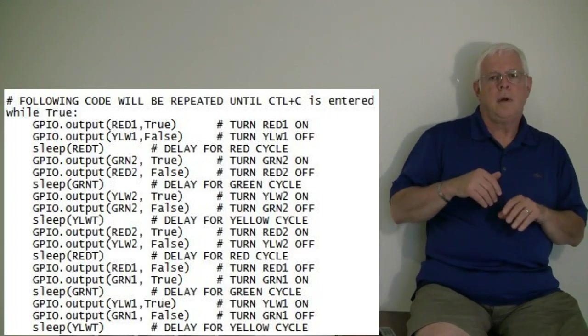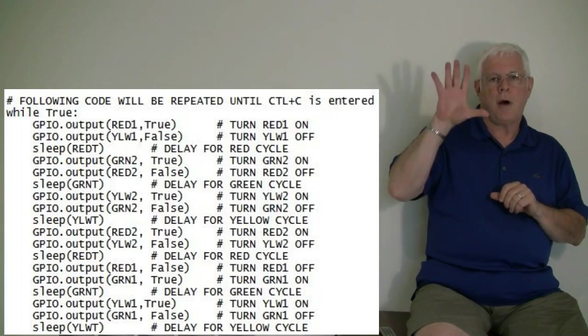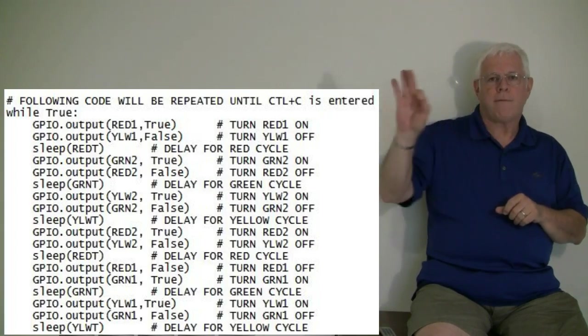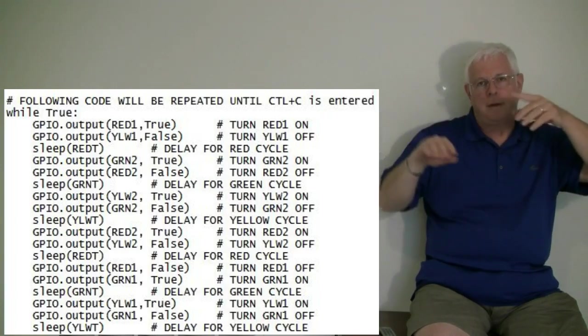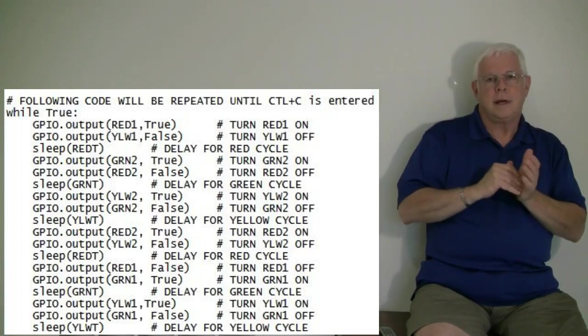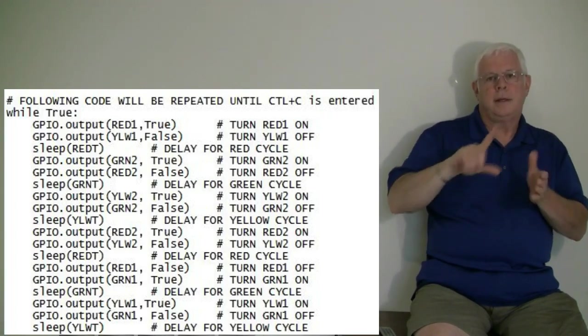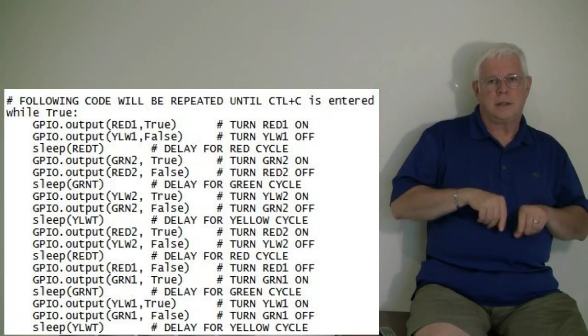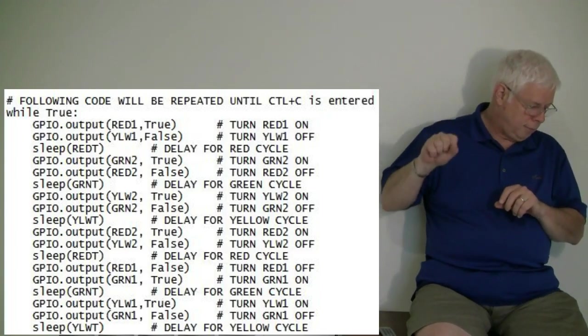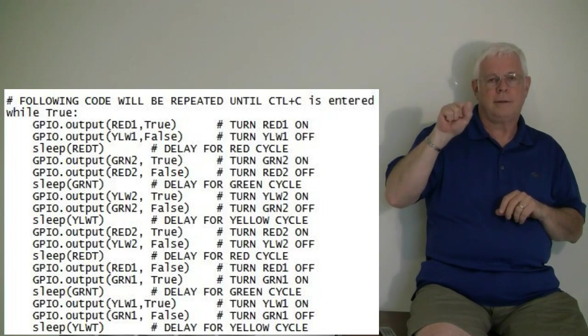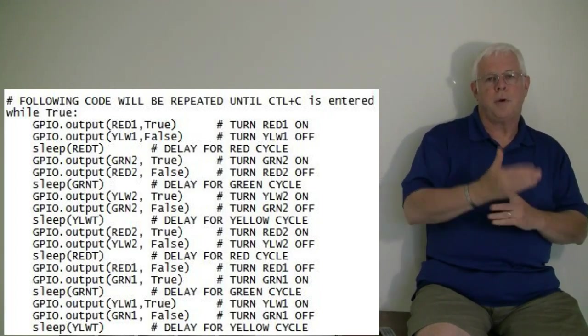Now we're in the main loop of the control for the lights. The first command turns on red one and turns off yellow one. Maybe not be clear right now, but when we get down to the end of the loop and come back and start again, it'll be clear why we're doing that. Then we're going to wait for the red time delay. After that is finished, then we're going to turn the green light on. Green two is going to go on and red two is going to go off. And then we're going to wait for the 10 second delay for the green.